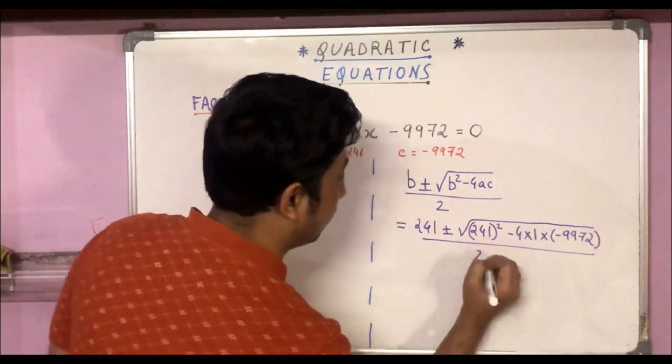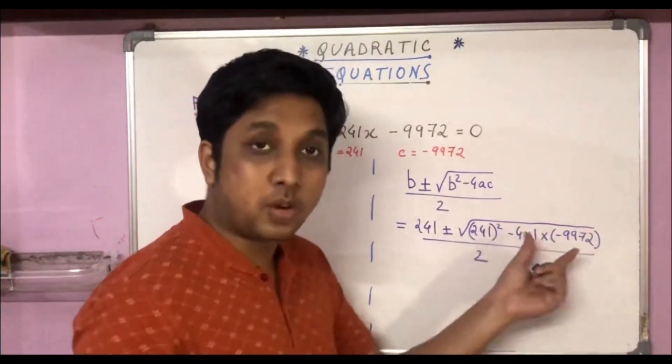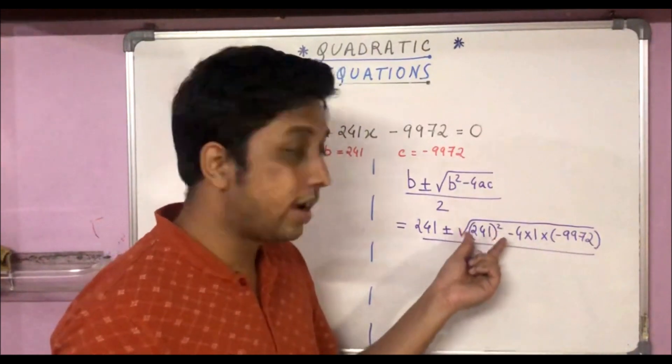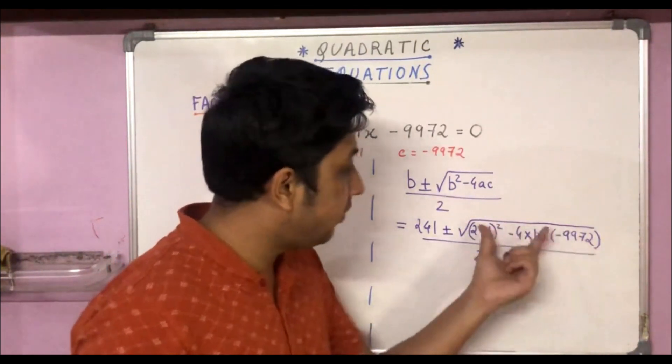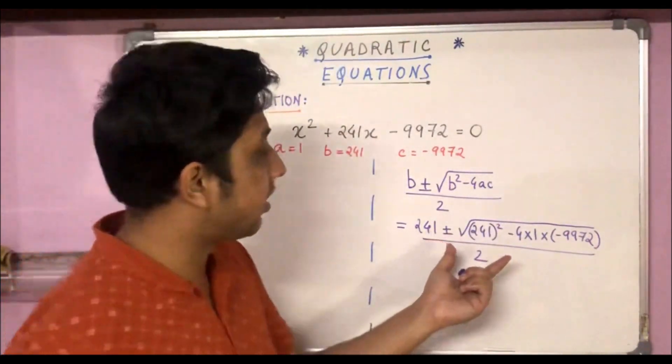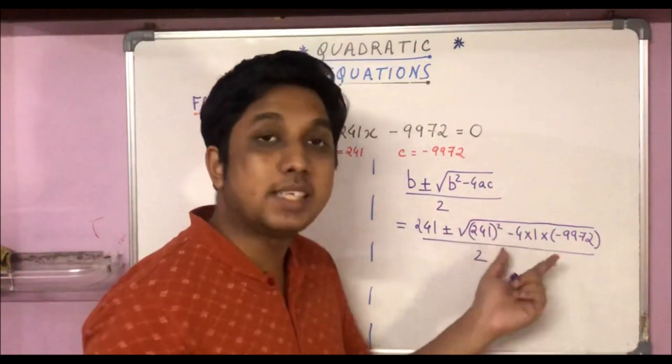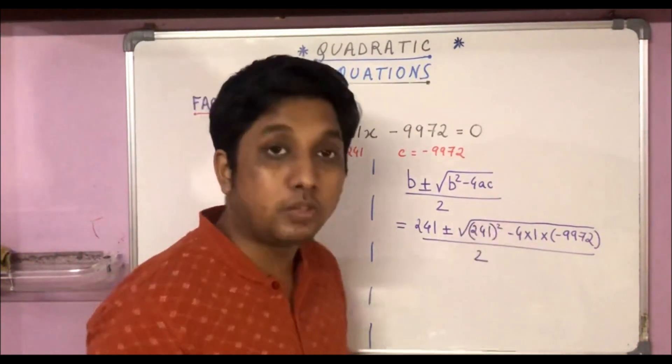Let's put these values: 241 plus minus root over 241² - 4 × 1 × (-9972), divided by 2. After putting the values, now this part is pure calculation. Minus times minus is plus, so this product will be added to 241². I have already calculated this; it comes out to be 97969, whose square root is 313.